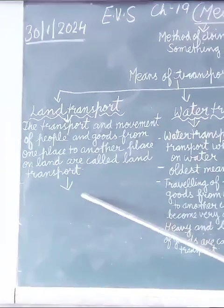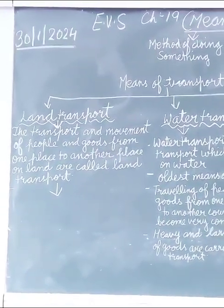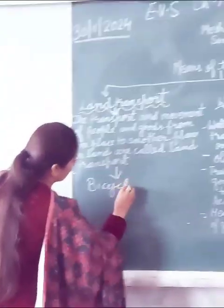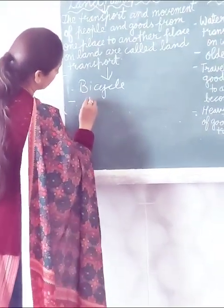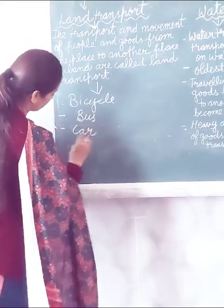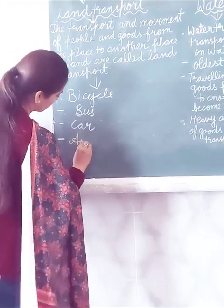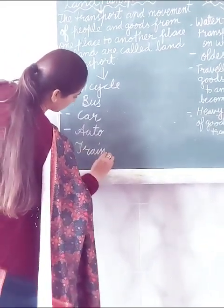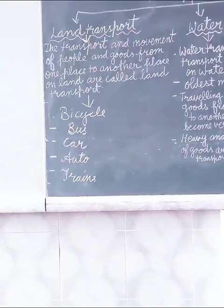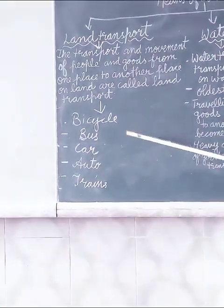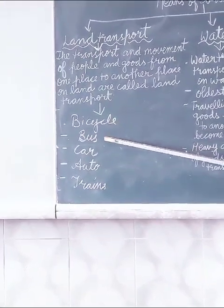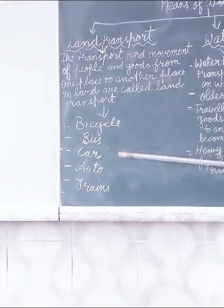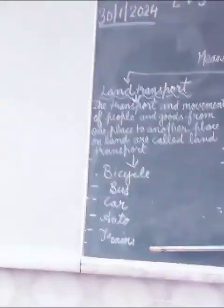Here are the examples of land transport: bicycle, bus, car, auto, and trains. There are a huge number of examples in land transport, but the main ones are bicycles, bus, car, auto, and trains. These all run on land and have wheels that move on land, which is why they are examples of land transport.